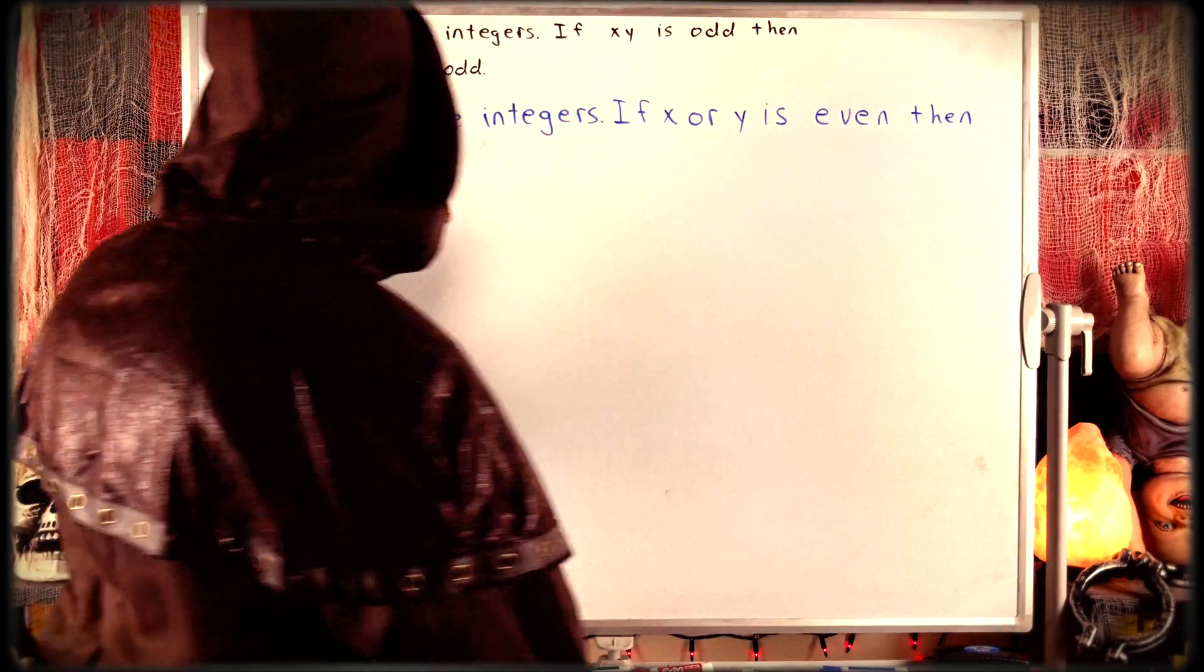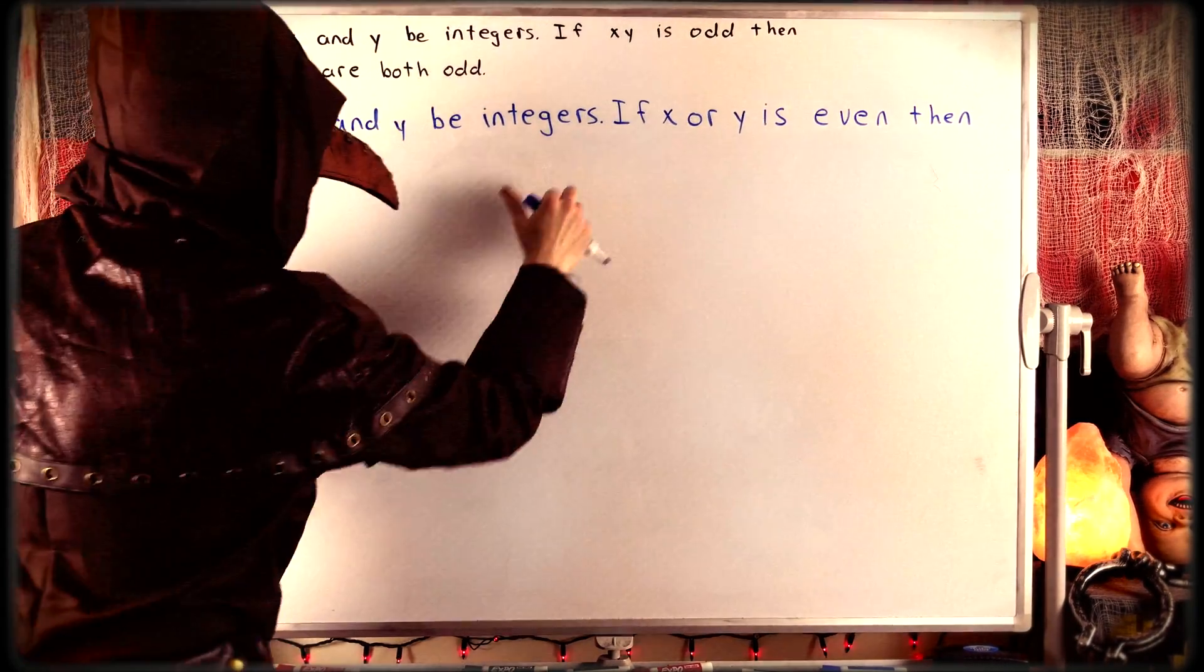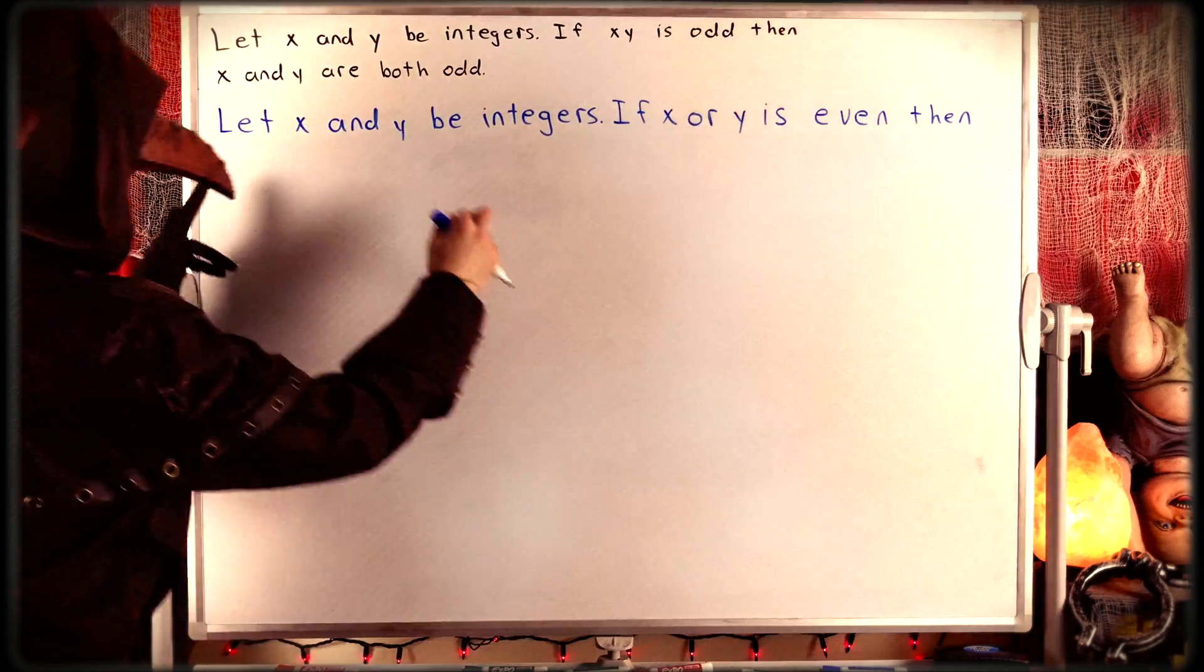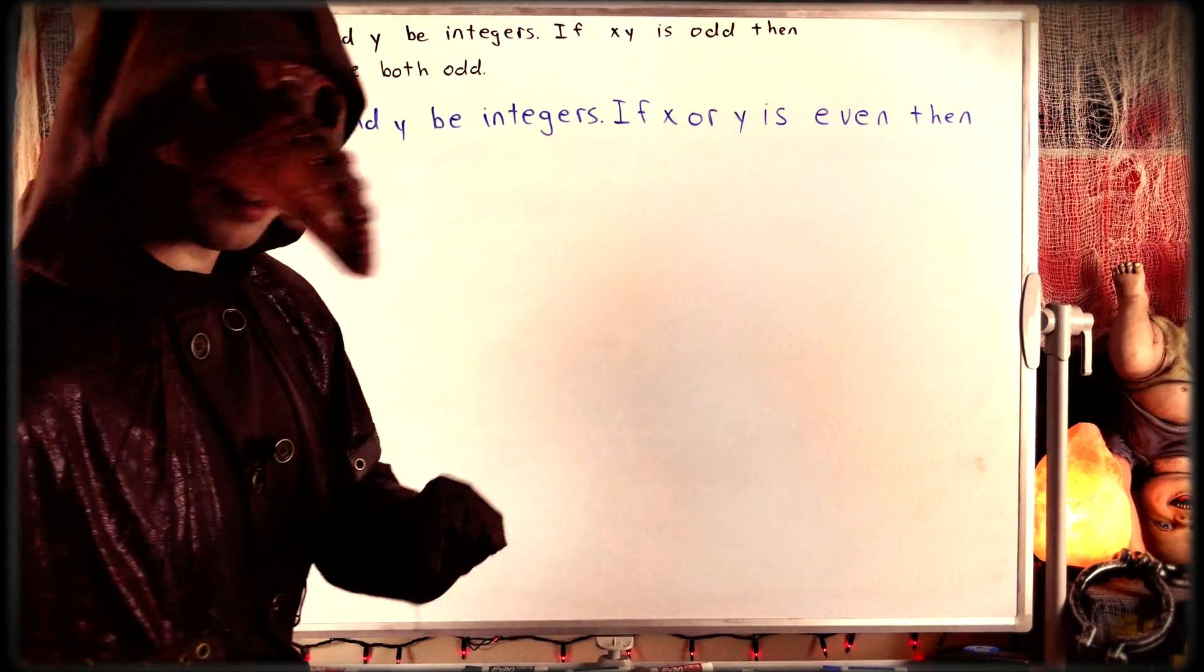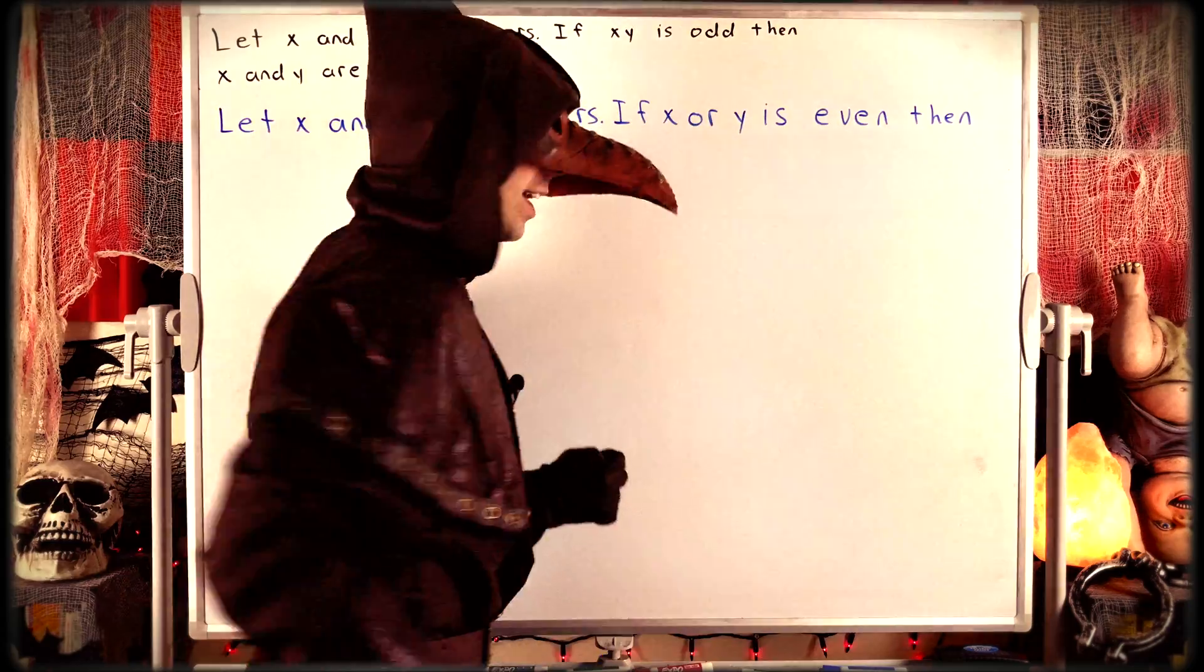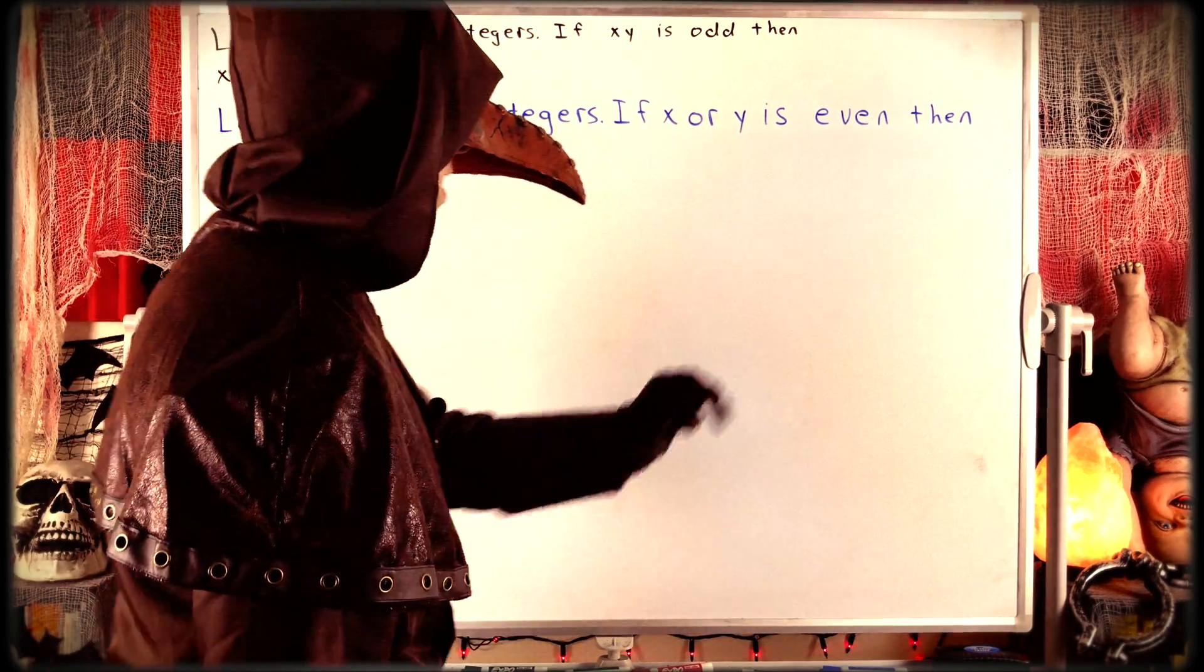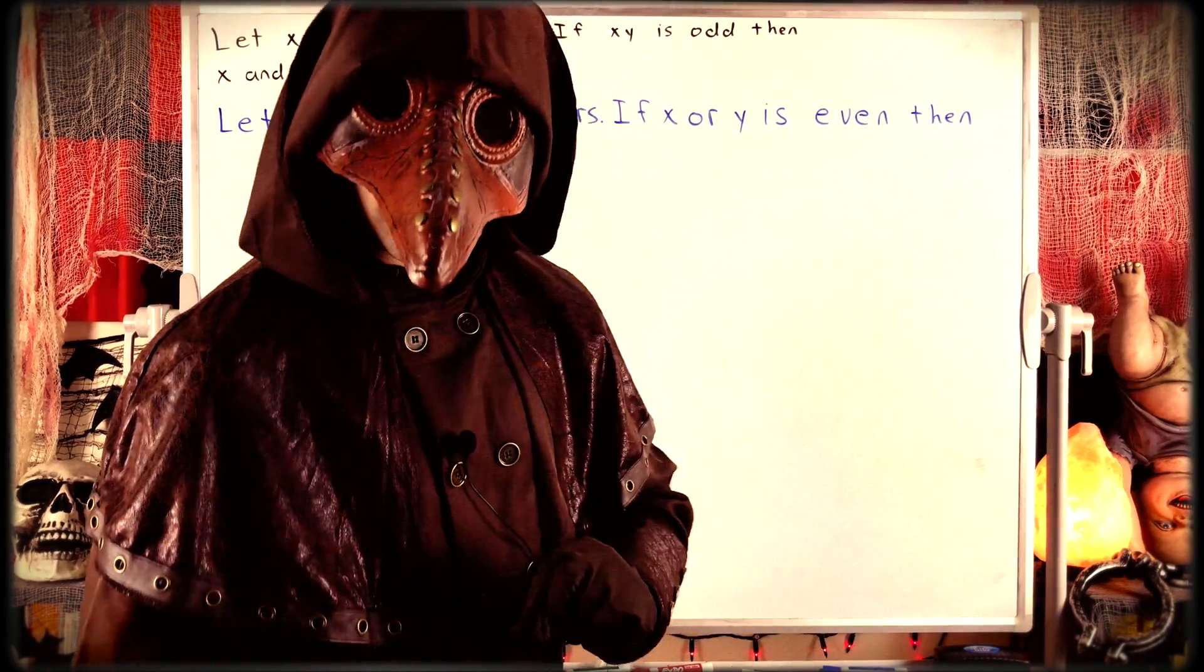So there's the beginning of our contrapositive statement. We begin by mentioning the object that we're talking about. That part doesn't change. Let x and y be integers. And then if x or y is even, so at least one of x or y is even, then what does that imply?